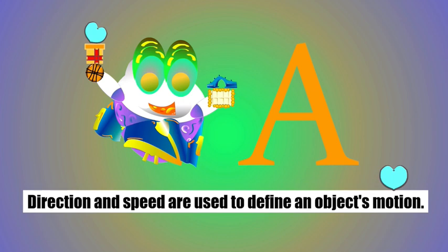If direction and speed remain constant, that defines an object's motion. If there's any change in direction or speed, that will be defined as acceleration.